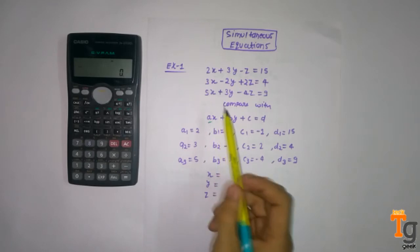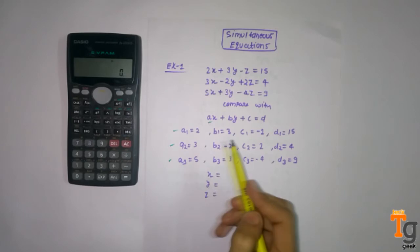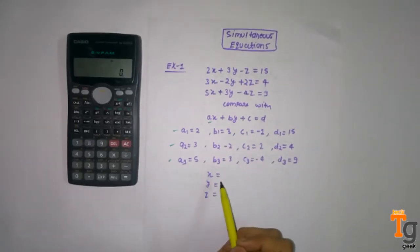When you compare each equation you will find the value A1, A2 and A3, B1, B2, B3, everything. So how do we find the value of x, y, z using calculator?